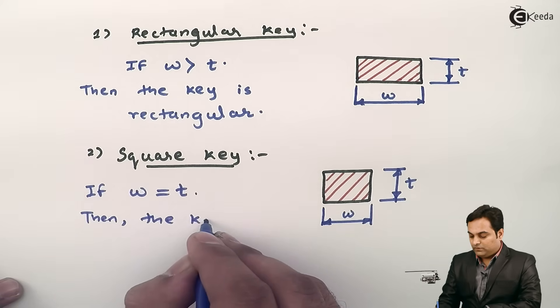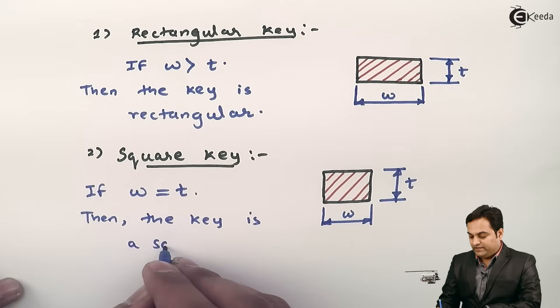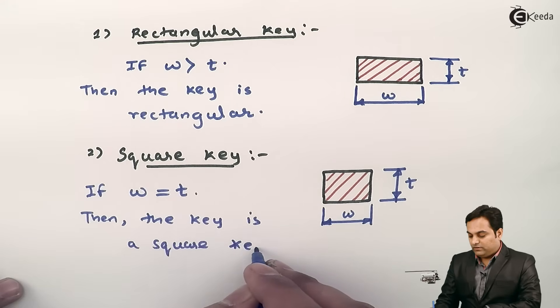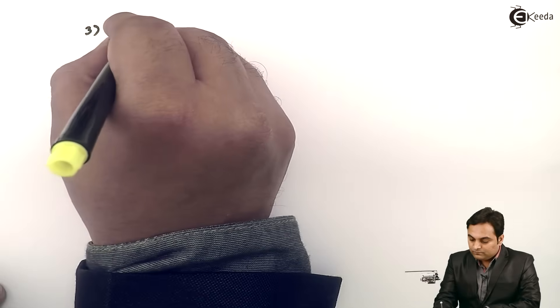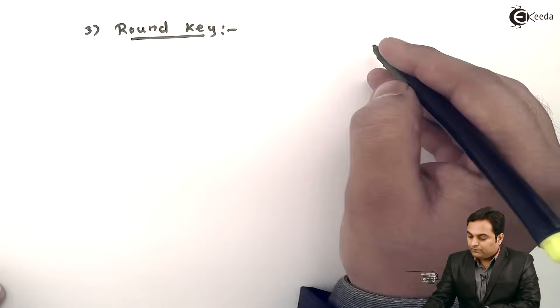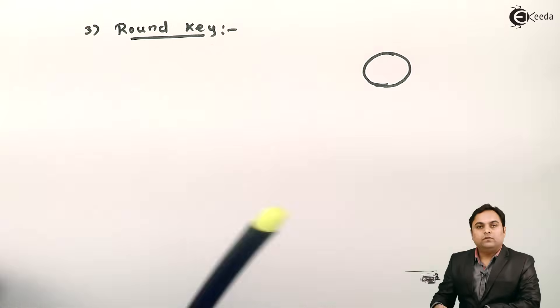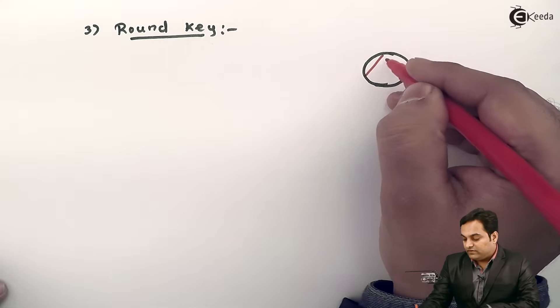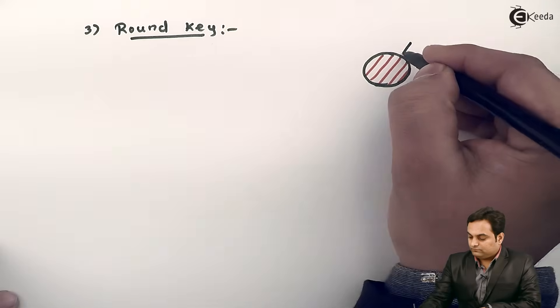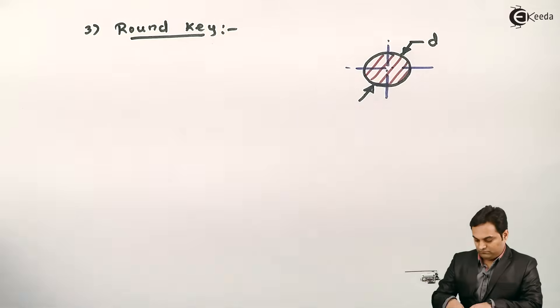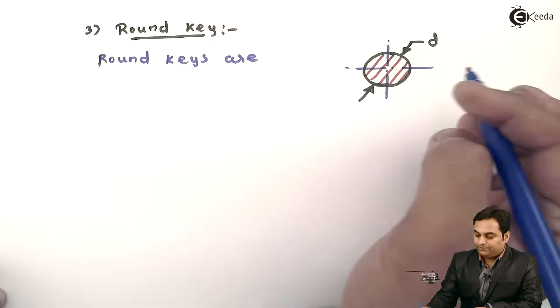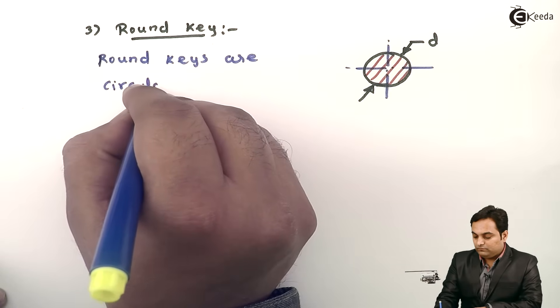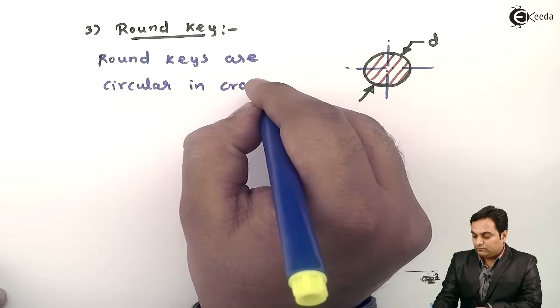Next, after this we have a round key. If we have the section of the key in the form of a circle, so round key—I can say that round keys are circular in cross-section.